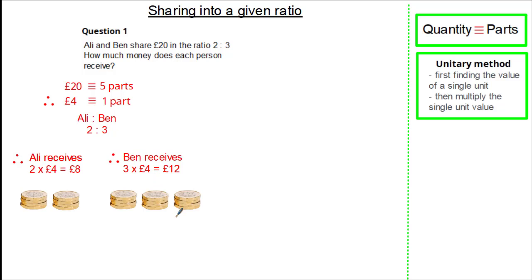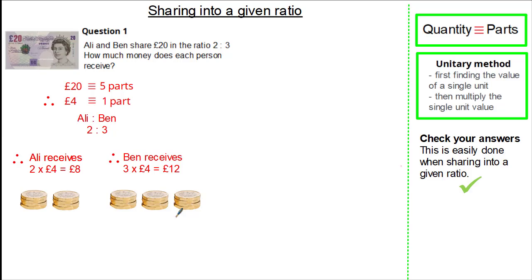Ratio questions are helpful because we can always check our answer. If you add the £8 and the £12, it gives our total of £20. This is a really good check, and it's easily done when sharing into a given ratio.